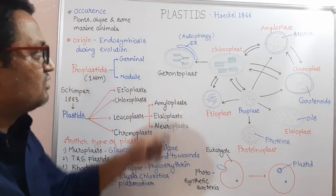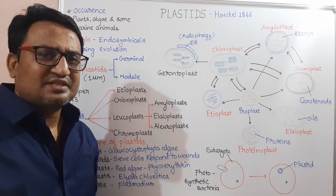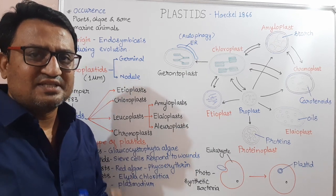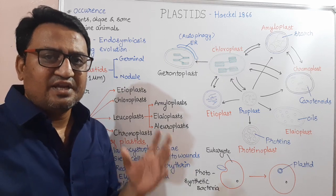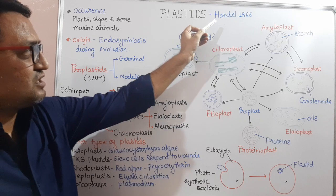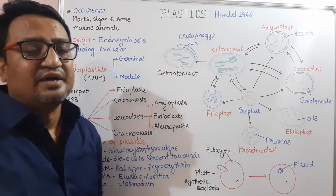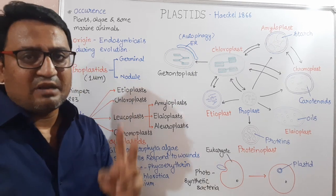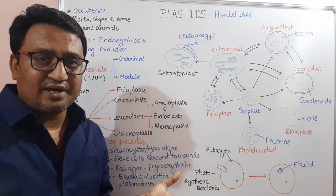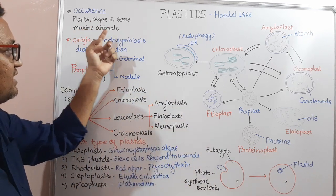In our new topic, we study the cell organelle called Plastids. Plastids are the group of organelles which show the storage and synthesis of various chemical substances. The term Plastid was first given by Haeckel in 1866. Plastids are double membranous organelles. They contain DNA, similar to mitochondria, and they occur in plants, algae, and some animals.